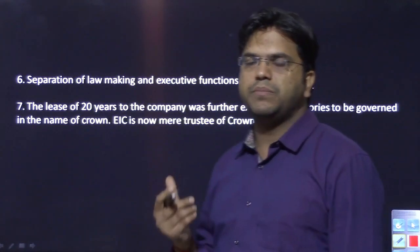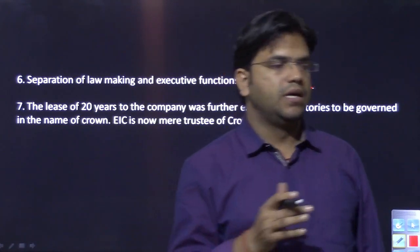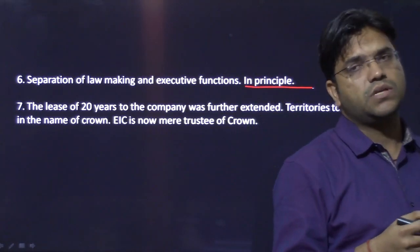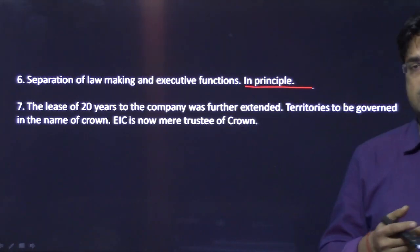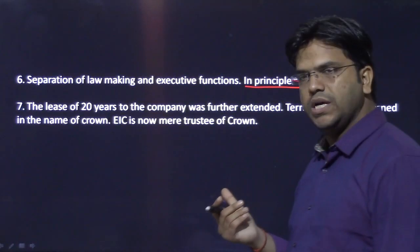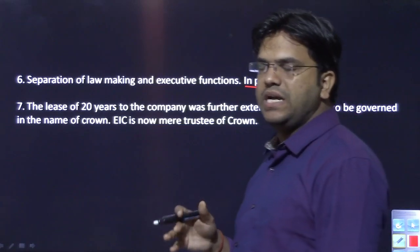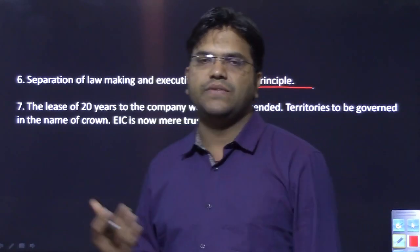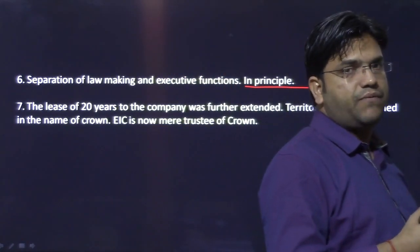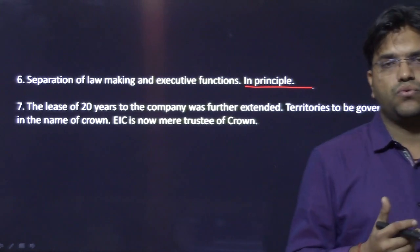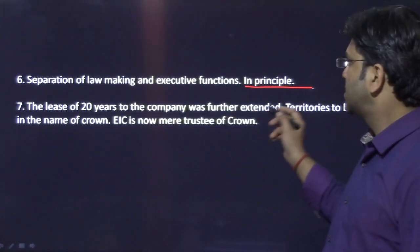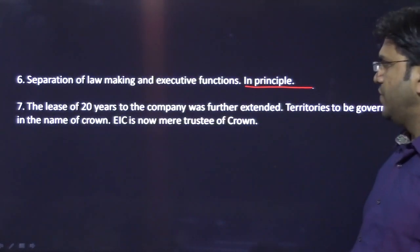Finally, in 1853, the Indian Legislative Council (ILC) is recognized as a 12-member body, and from there the legislative council and executive council start functioning separately. So this sixth provision about separation of legislative and executive functions remained only in principle until 1853.